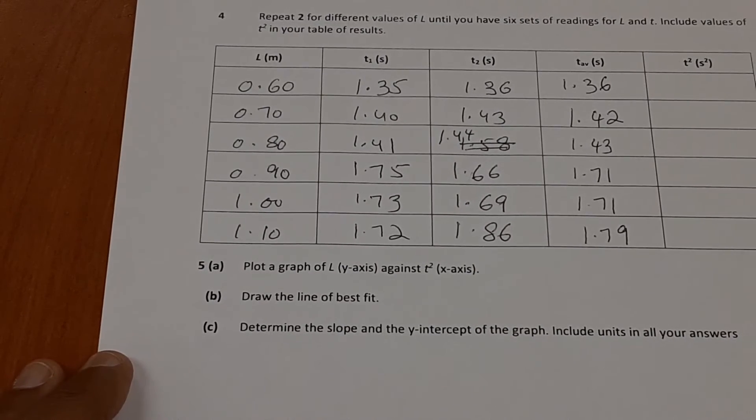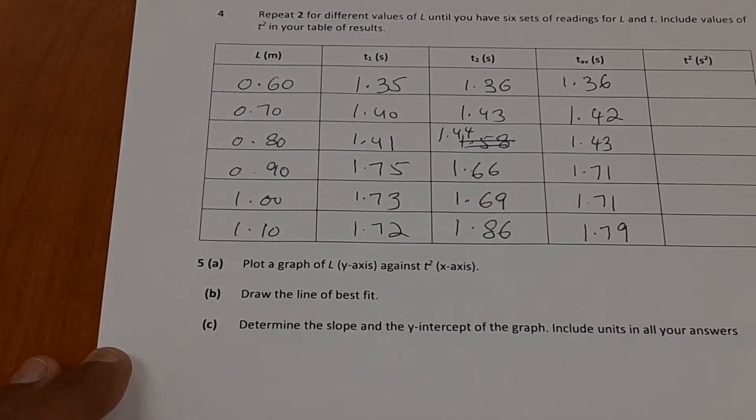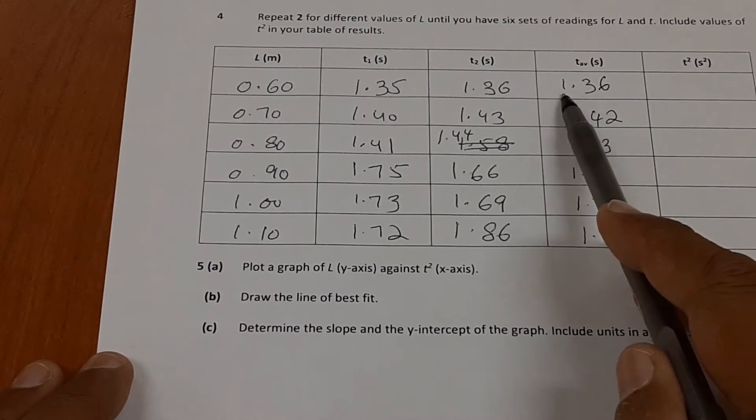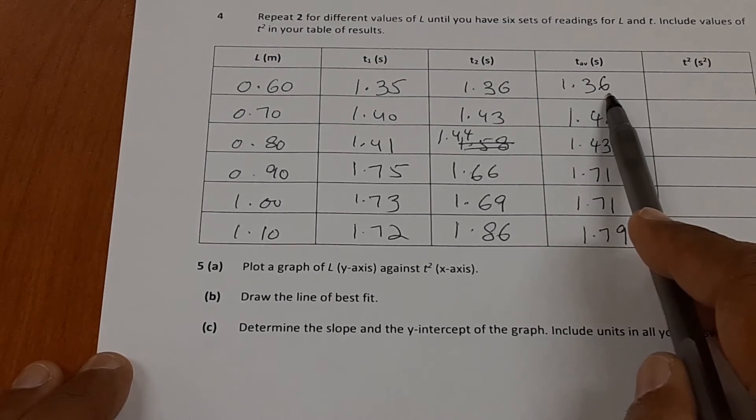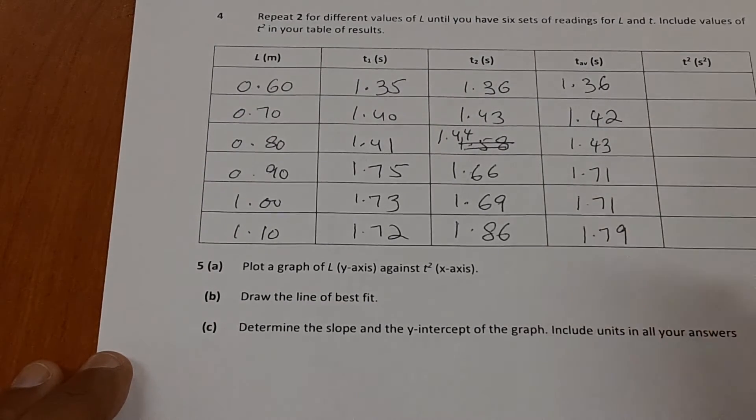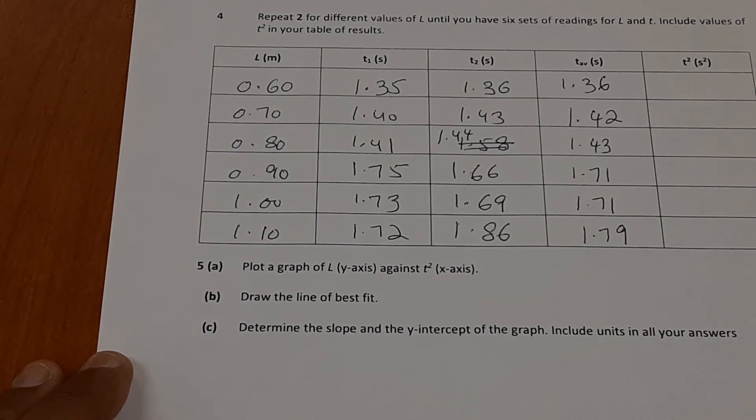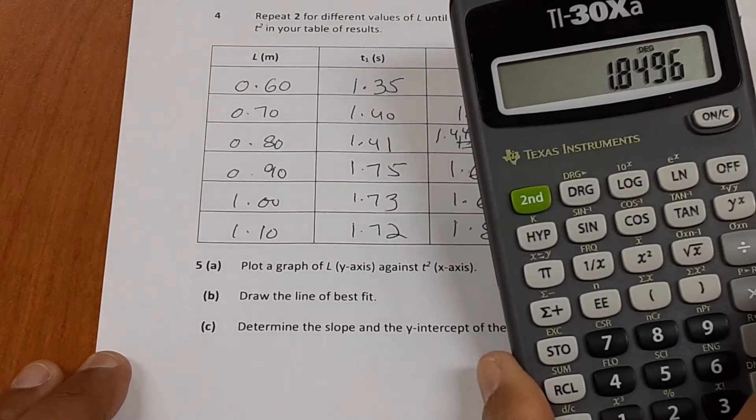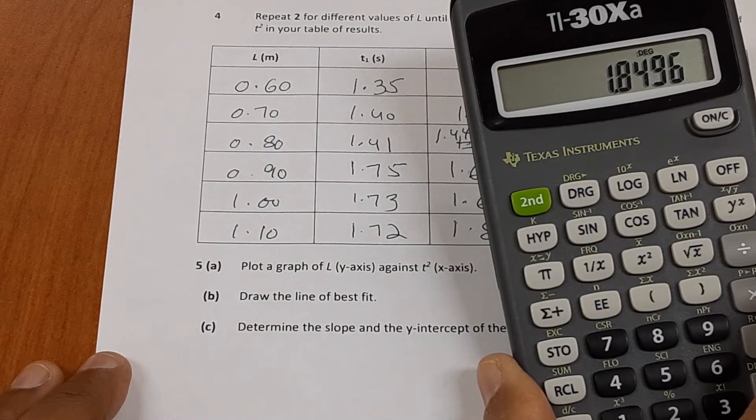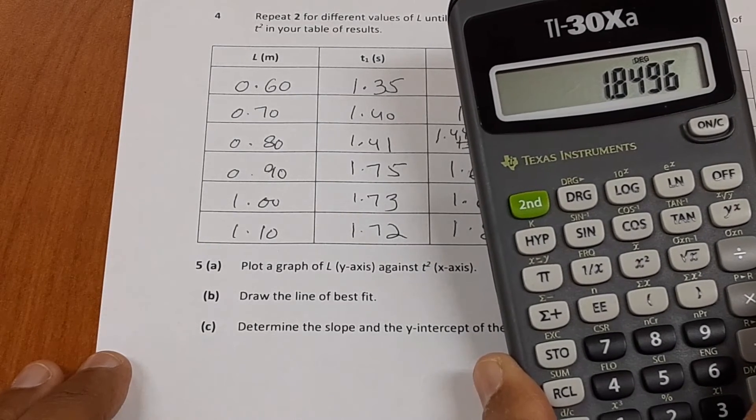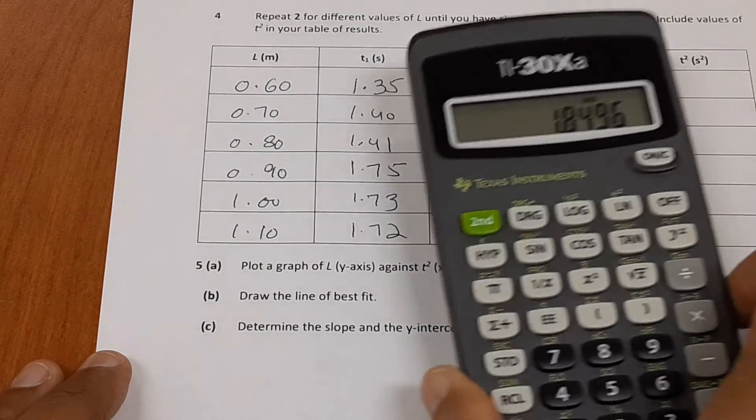So I have now filled my column for average time. Next thing I need to do is find the square. Again, please remember these 1.36, this is three significant figures. And t squared depends on t. So since t is to three significant figures, therefore t squared should also be to three significant figures. So my calculator says that 1.36 squared is equal to 1.8496. But I cannot write 1.8496. I will write it only to three significant figures. So I would write it as 1.85.